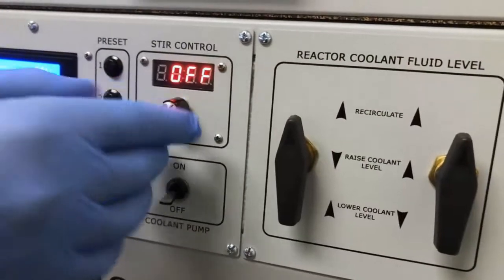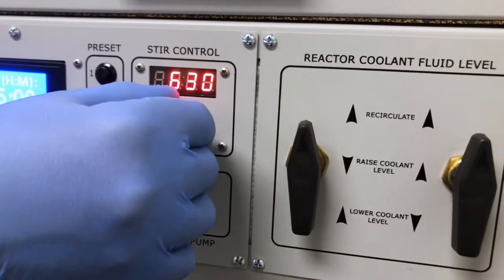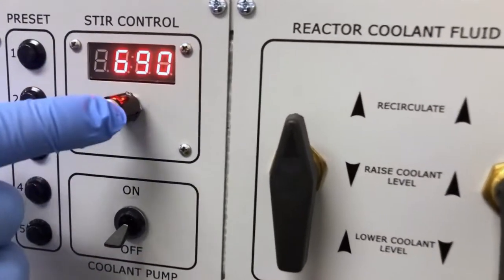The stir control allows you to set the speed of the heavy-duty stirring magnets under the reaction chamber. Simply press the control knob, turn it on or off.